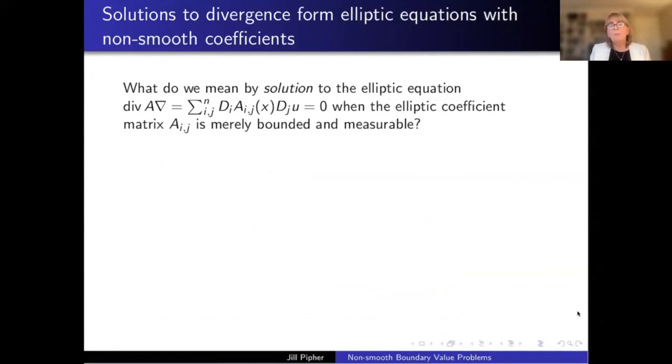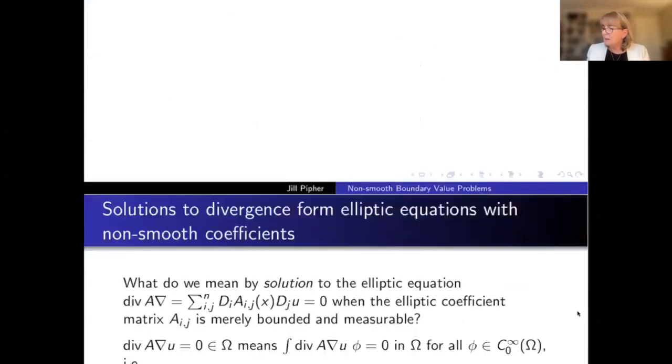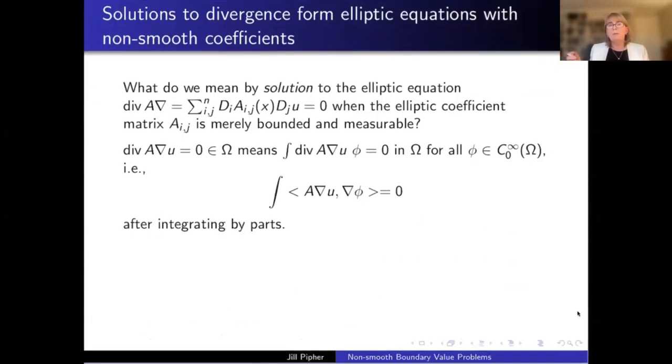Okay, so I want to try to explain what we mean by a solution to this elliptic equation when you can't actually place this derivative on A. You can't actually differentiate AIJ because it doesn't have derivatives. It's not even necessarily continuous, it's just some bounded and measurable function. Another way of thinking about this, if this is totally unfamiliar, is that what we're looking for is a way of defining solutions and proving properties of them that don't depend on how smooth the matrix is, that don't depend on any smoothness parameters, any measure of how many derivatives this has.